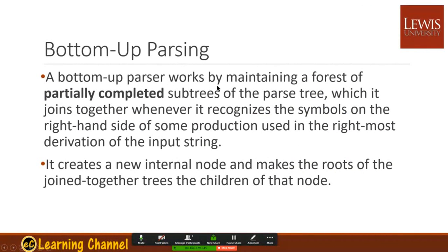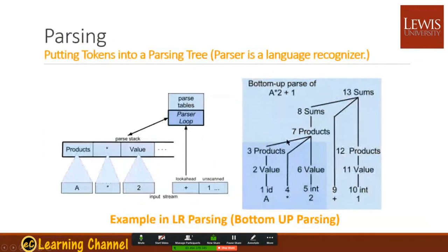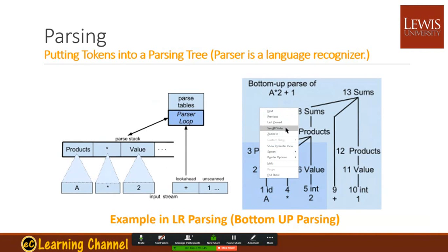A bottom-up parser works by maintaining a forest of partially completed subtrees. In a LR parser, we parse through partial trees and assemble them together part by part. We push items onto the parse stack and then pop out both sides and link them together as a bigger tree. So it relies on a parse stack. We have a parse table, a parse stack, and an input string in LR parsers.